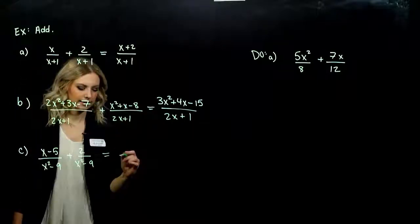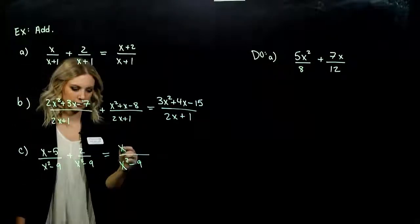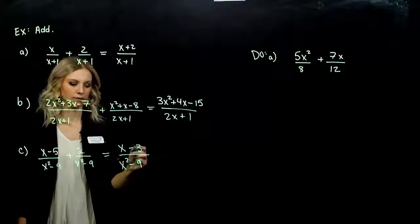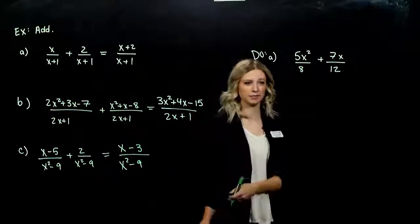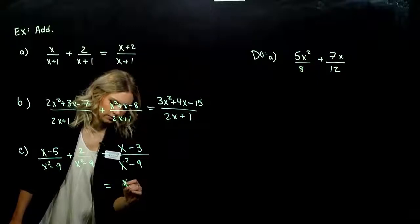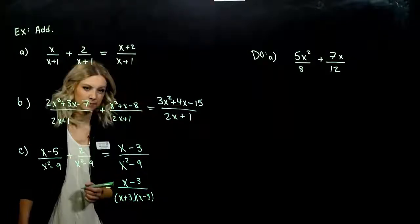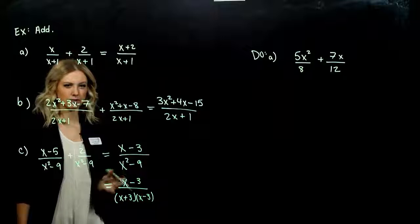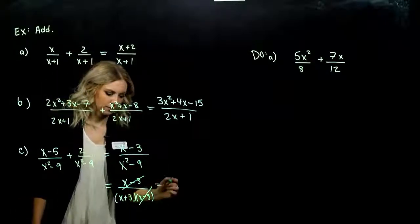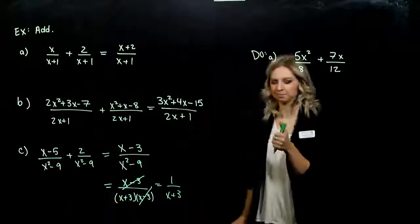Next one. Again, same denominator, so we add the numerator. I have x and negative 5 plus 2, so I get negative 3. But in this case, can we simplify a little bit farther? We can, because the denominator is a difference of squares — and how does it factor? x plus 3, x minus 3. Now, since everything is factored, we can look for common factors top and bottom that we can cancel out. That entire factor x minus 3 cancels, and we're left with 1 over x plus 3. Can we go any farther? Nope, we're finished.